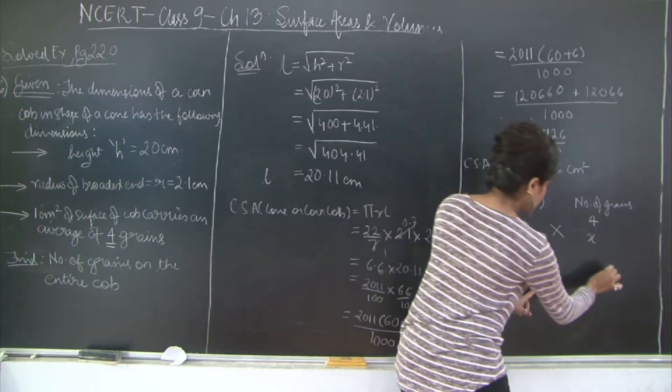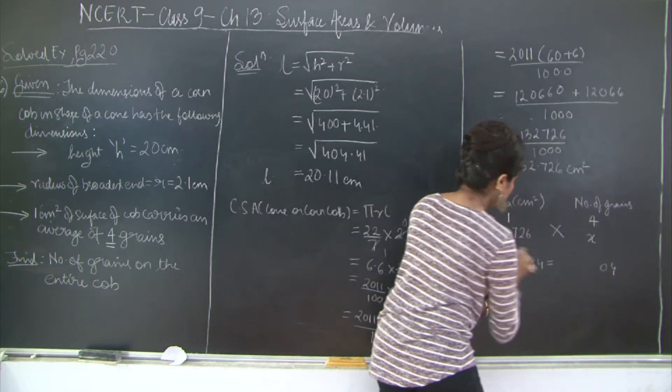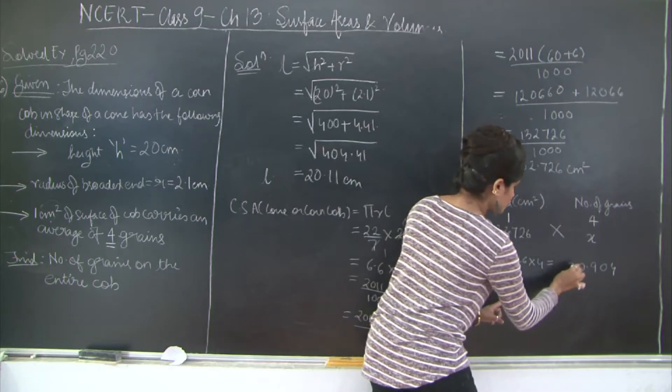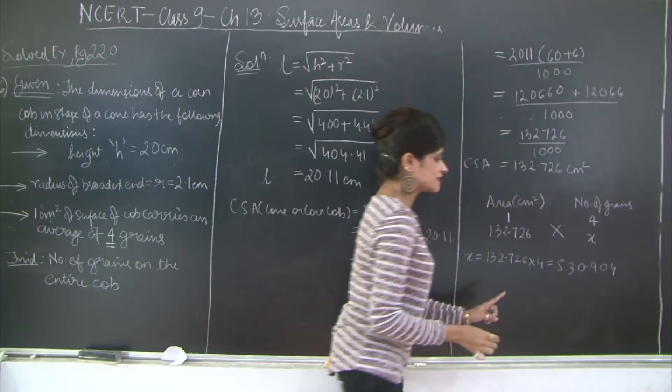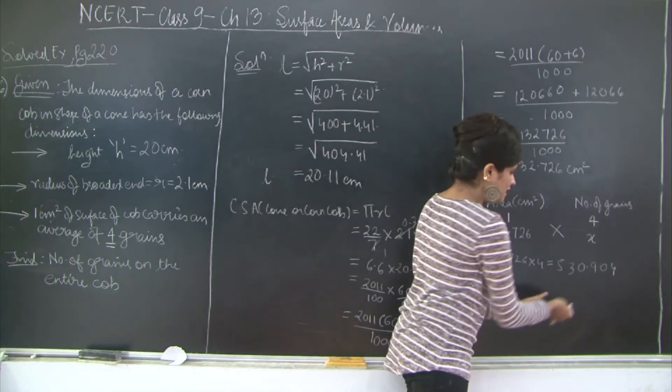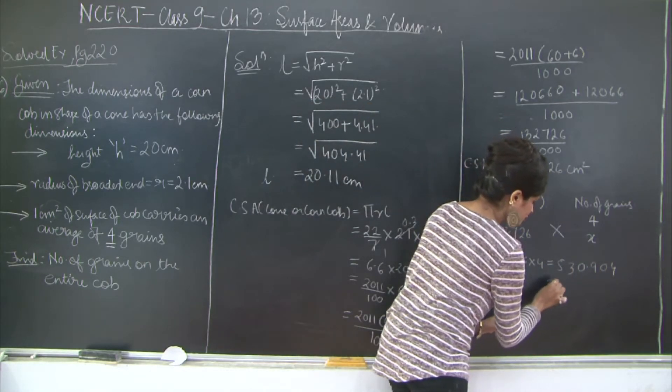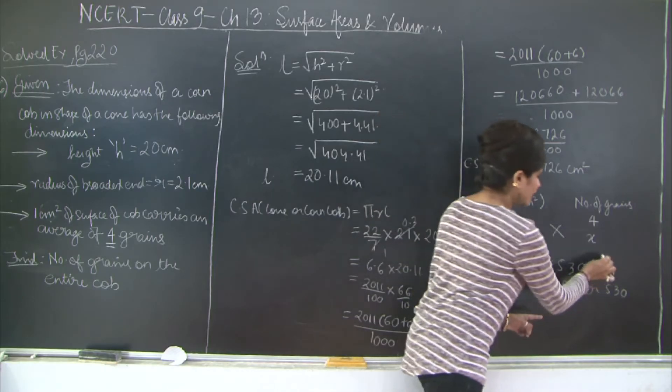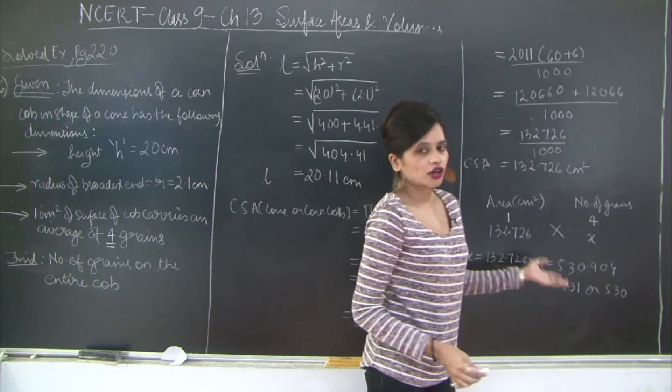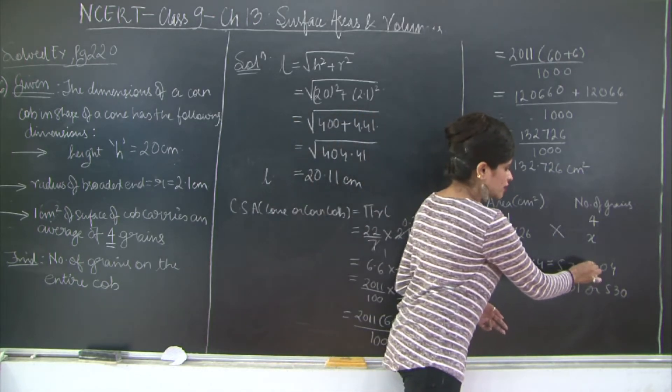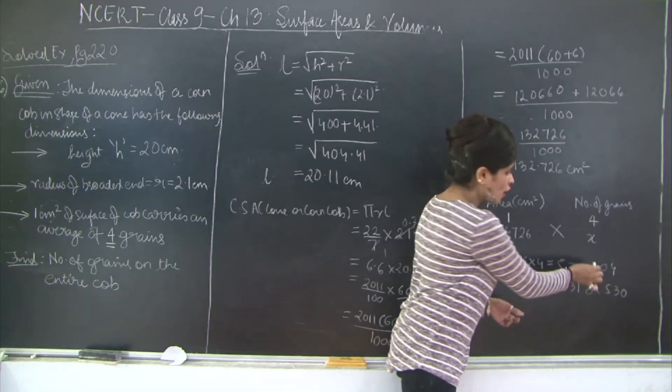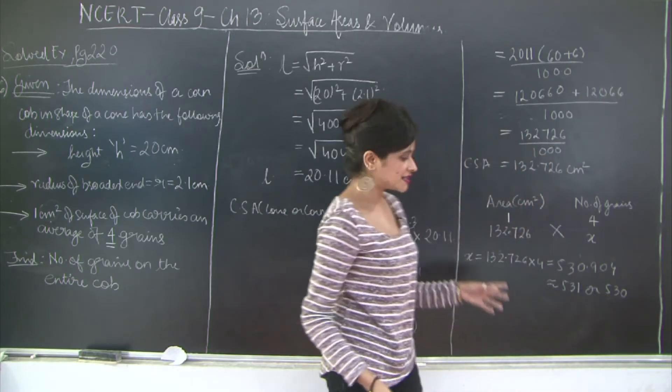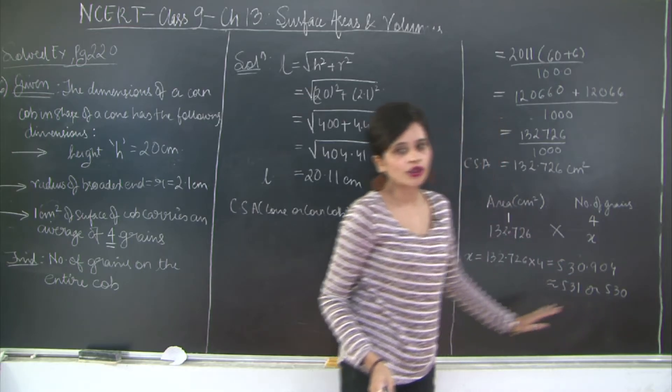x is equal to 132.726 into 4, which is going to be 4 sixes are 24, 4 twos are 8, 9, 10. 4 sevens are 28, 29. 4 twos are 8, 9, 10. 4 threes are 12, 13. 4 ones are 4, 5. So 530.904. So you can either take this value as 531 or you can take it as 530. Why? Because 0.904 doesn't mean a whole number. The grains are going to be in whole numbers. You can say approximately 531 or 530 grains will grow on the corn cob.